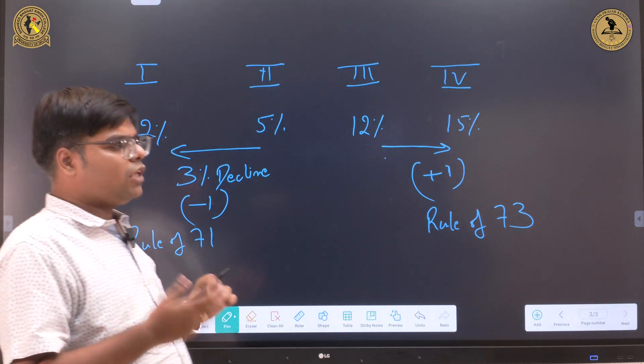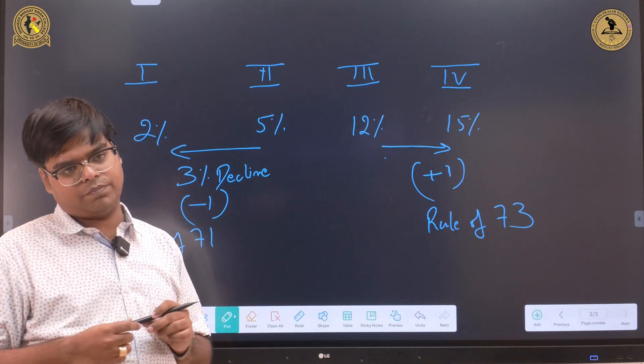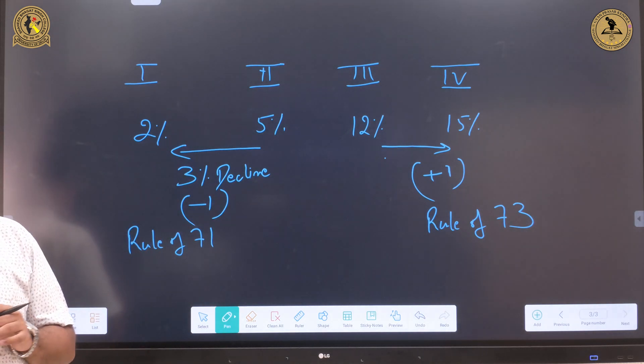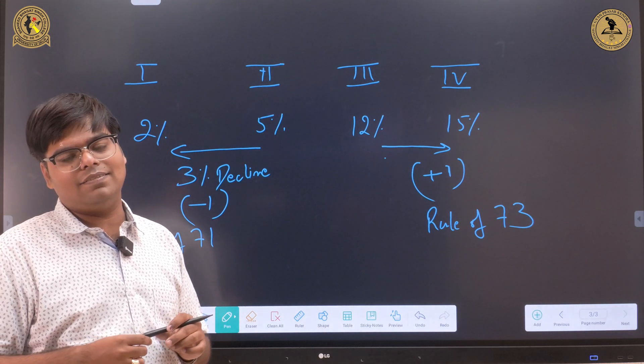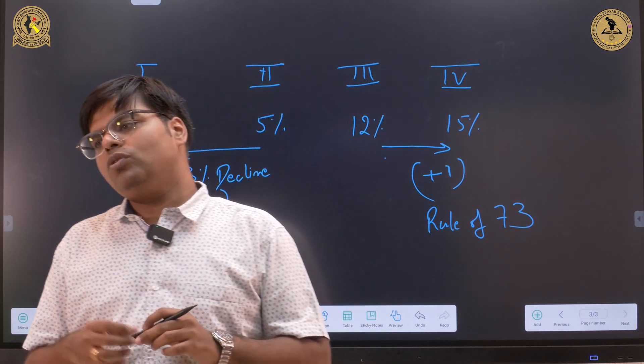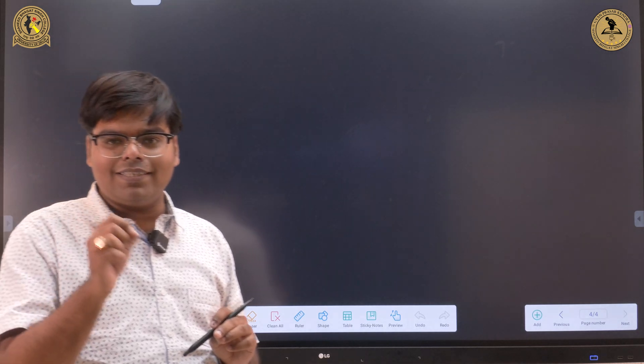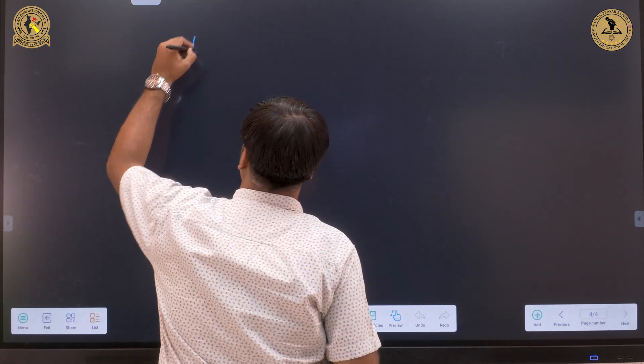Now the question arises: how does this figure 72 arise? Now this is a simple logic. The logic lies in the concept of present value and the future value. So this is a famous formula for understanding the relationship between the future value and the present value.